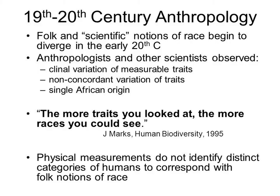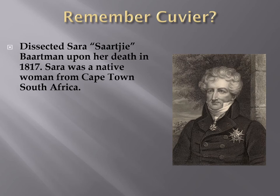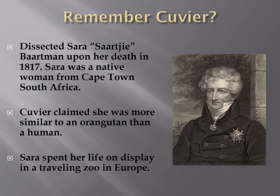Physical measurements themselves do not identify distinct categories of humans that correspond with folk notions about race. George Cuvier actually did quite a bit of writing about race. He dissected Sarah Bartman upon her death in 1817. Sarah was a native woman from Cape Town, South Africa, who spent most of her life living in a traveling zoo in Europe. Upon his examination and autopsy, Cuvier claimed she had anatomy more similar to that of an orangutan than a human. These early 19th century studies were really focused on placing different human groups on a scale, with white Europeans being the most evolved and people of color the least evolved.